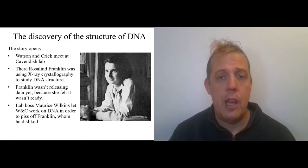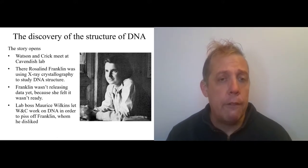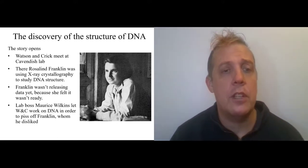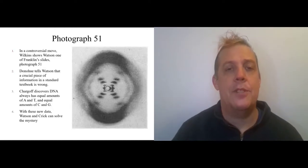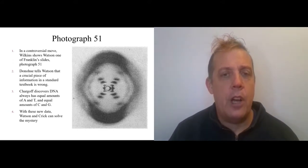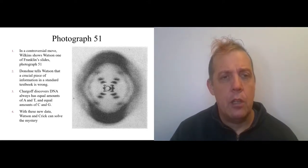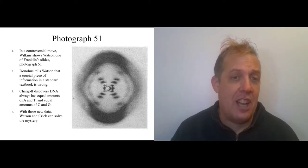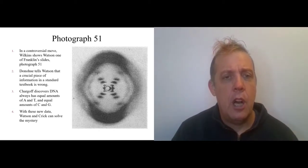The lab boss, Maurice Wilkins, let Watson and Crick look at Franklin's data in order to piss her off. He disliked her and misogyny plays a big role here. Franklin got a lot of opposition from men in science for being a woman in science. So to piss her off, Maurice Wilkins lets Watson and Crick look at a picture. This is the picture, photograph 51. And this provides a crucial piece of evidence to Watson and Crick. There are a couple other things that they learn. They learn from word of mouth that a crucial piece of information in a standard textbook is wrong. So they're actually using a standard textbook to do their work and it's got a false piece of information in it.